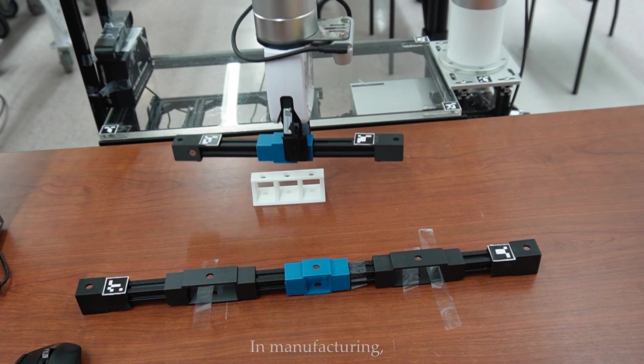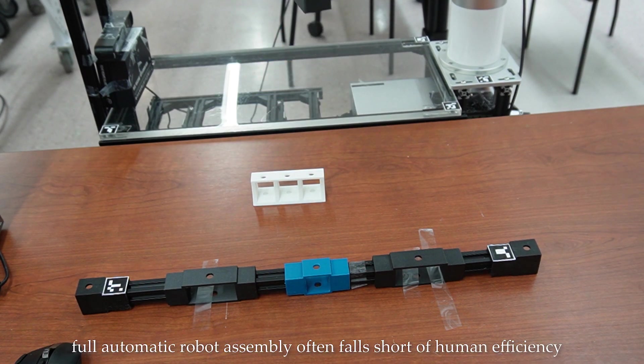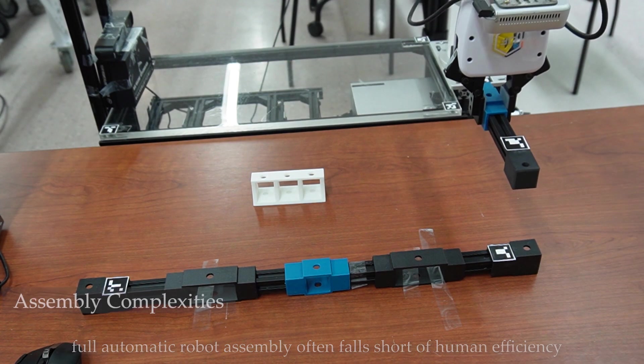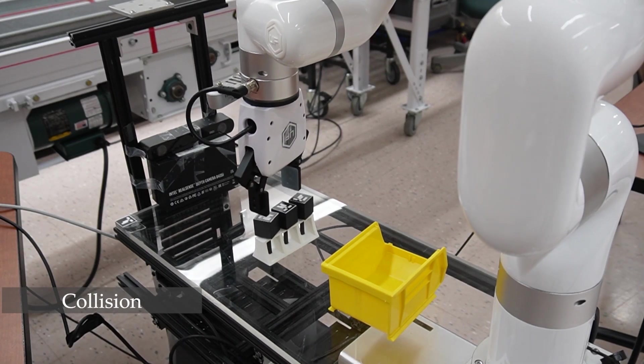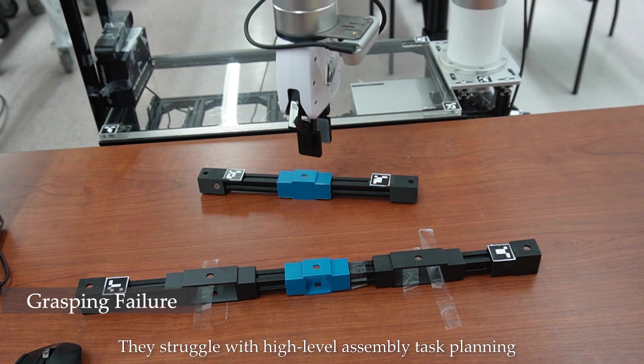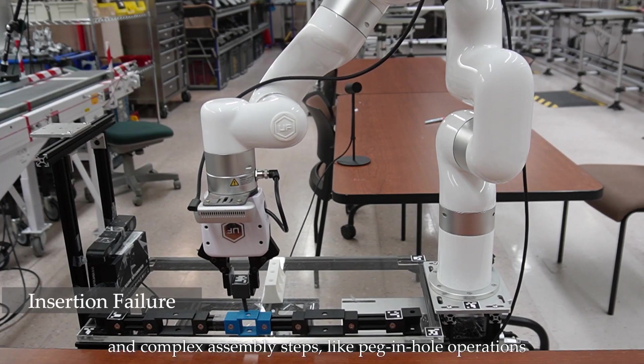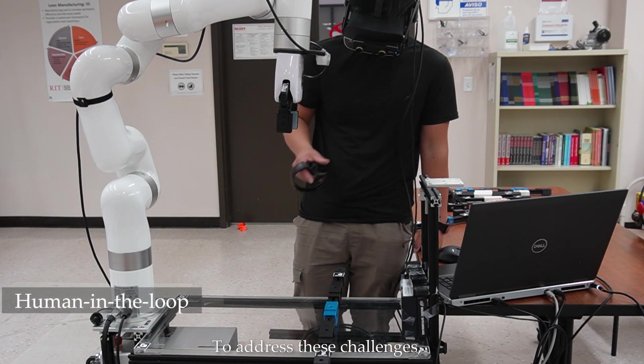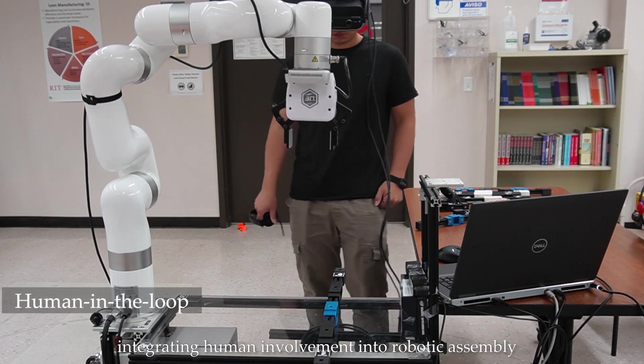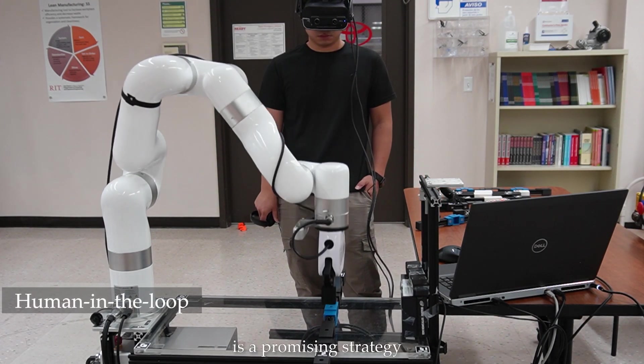In manufacturing, full automatic robot assembly often falls short of human efficiency due to limitations in understanding task complexities and the environment. They struggle with high-level assembly task planning and complex assembly steps like peg and hole operations. To address these challenges, integrating human involvement into robotic assembly is a promising strategy.